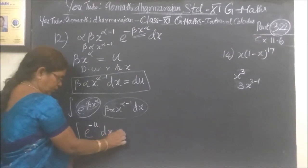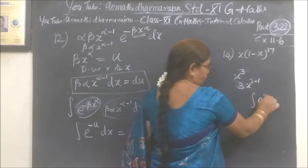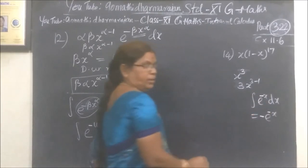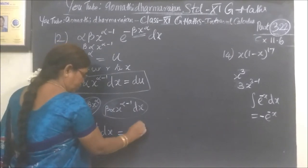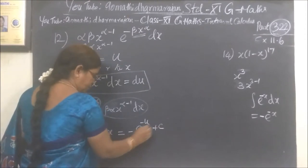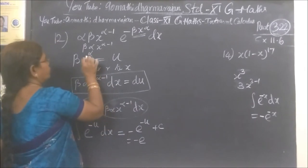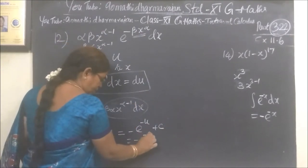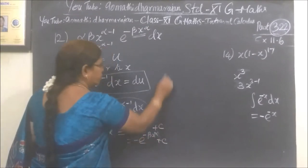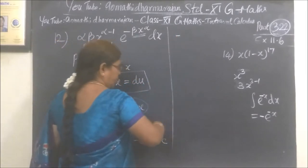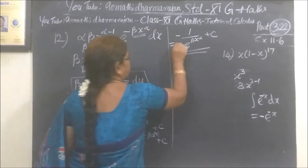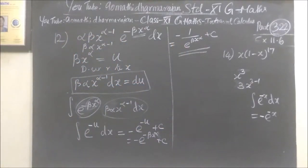Integral of e power minus u. The derivative of e power x is e power x itself. So here, minus: put e power minus u plus c. That is equal to minus e power minus u, where u is beta x power alpha. So minus e power minus beta x power alpha plus c.